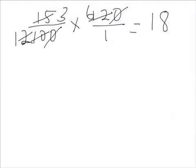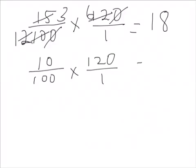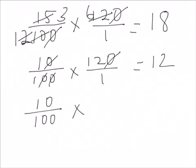Let's look at rugby. 10% chose rugby. Same drill. 10 over 100 times 120 over 1. Let's simplify. We can cancel some zeros. And we are left with 1 times 12 is 12.